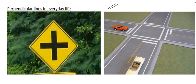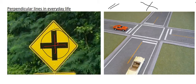One line would go in one direction, and the other line would go in the complete opposite direction. Here we can see some everyday life examples: this signboard — those two lines would be perpendicular because they are hitting each other at 90 degrees. This four-way stop over here is also perpendicular, because these lines are hitting each other at 90 degrees.